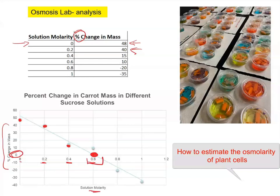This point is going to tell you that your carrot did not increase in mass and did not decrease in mass. So the carrot was sitting in isotonic solution. So that means this is the osmolarity of the actual carrot.